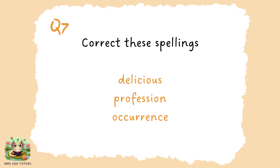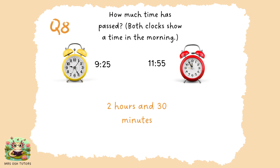Here are the correct spellings of 'delicious', 'profession', and 'occurrence'. Carefully check your spellings. Many children forget the second R in 'occurrence'. A way to remember it: if you removed that second R it would sound like 'occurence', so 'occurrence' needs a double R. Finally, the first clock showed 25 past 9 and the second clock showed 11:55, or five to twelve. The time elapsed is two and a half hours, or two hours and 30 minutes.